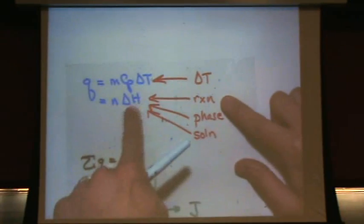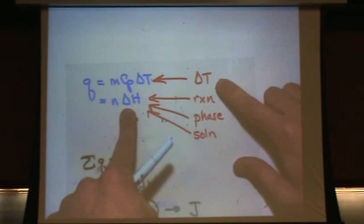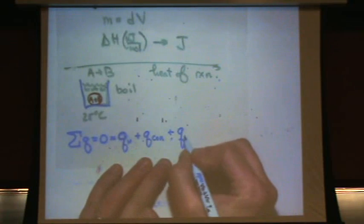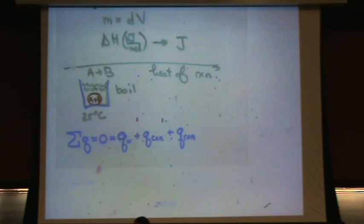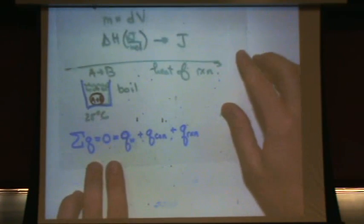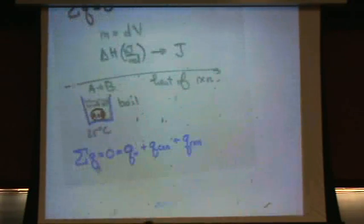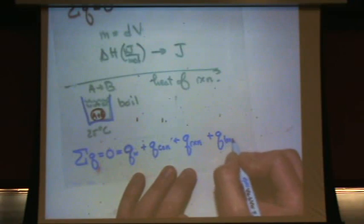So what does the reaction fall under? Yeah, it's going to be one of these. So there's only two possible change in temperatures. Now we're getting to a reaction. Yes, a reaction happened. That will have a Q rxn. Just make sure it's not a delta T factor. Is there a phase change? Yeah, all the water boils. So it's plus Q boil.